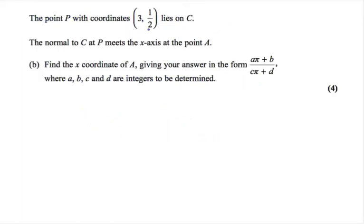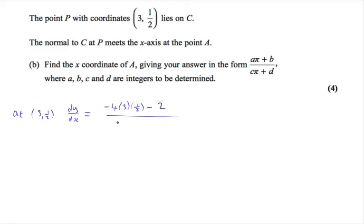The point P with coordinates (3, 1/2) lies on C. The normal to C at P meets the x-axis at point A. Part B says: find the x-coordinate of A, giving your answer in the form (aπ + b) / (cπ + d), where a, b, c, and d are integers to be determined. To find the normal, we first need to find the gradient of the tangent by substituting the coordinates into dy/dx. At the point (3, 1/2): dy/dx = (−4 × 3 × 1/2 − 2) / (2 × 3² + 4 + π × sin(π × 1/2)).